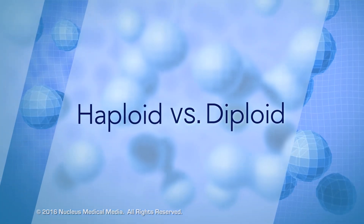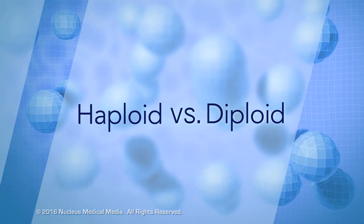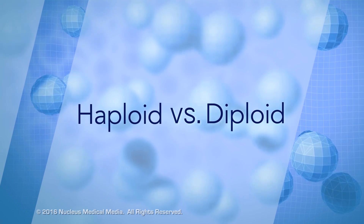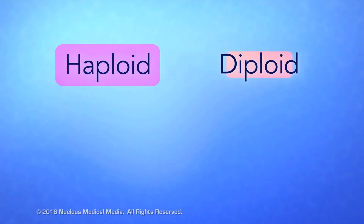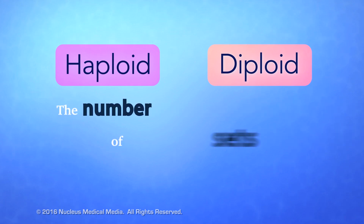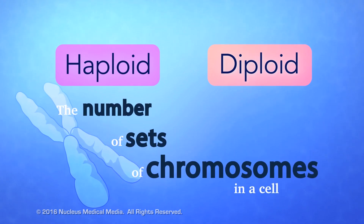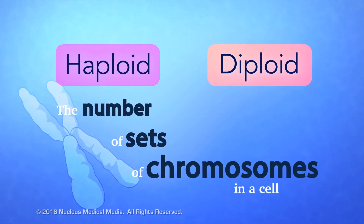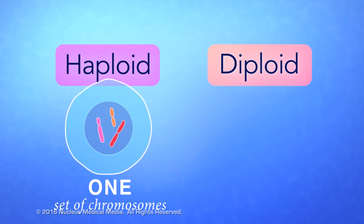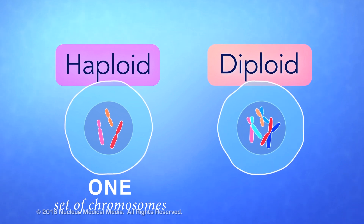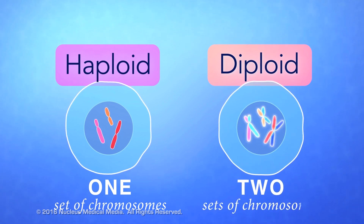In this video, we'll discuss haploid versus diploid cells. Haploid and diploid are terms that describe the number of sets of chromosomes in a cell. Haploid means a cell has only one set of chromosomes, and diploid means a cell contains two sets of chromosomes.